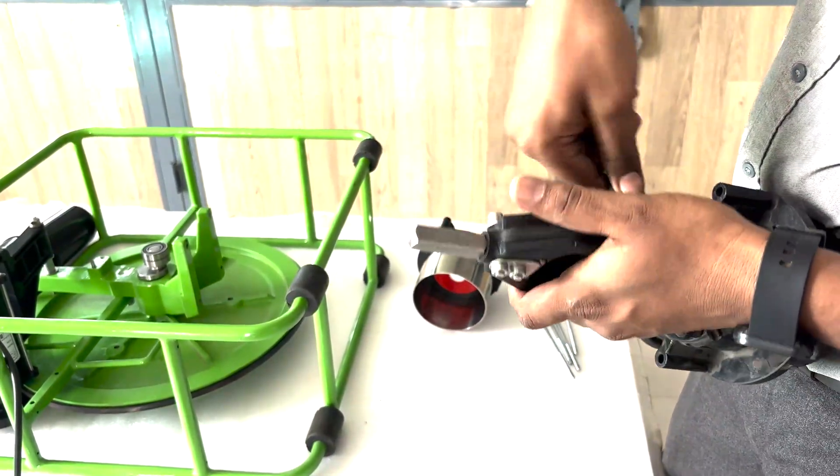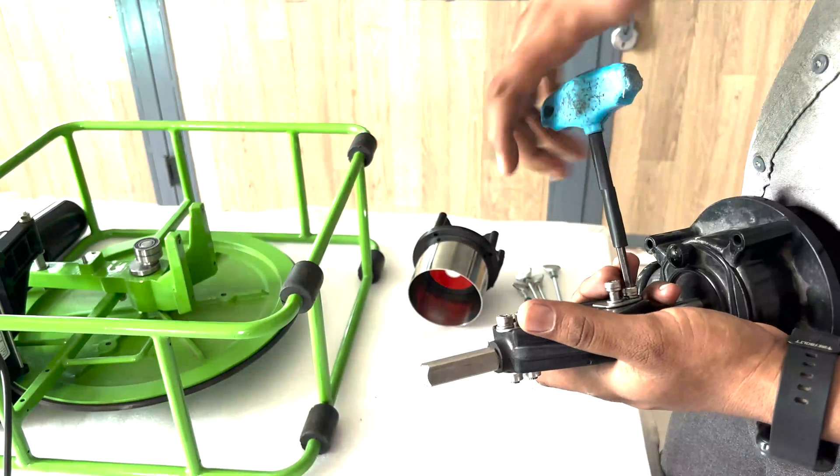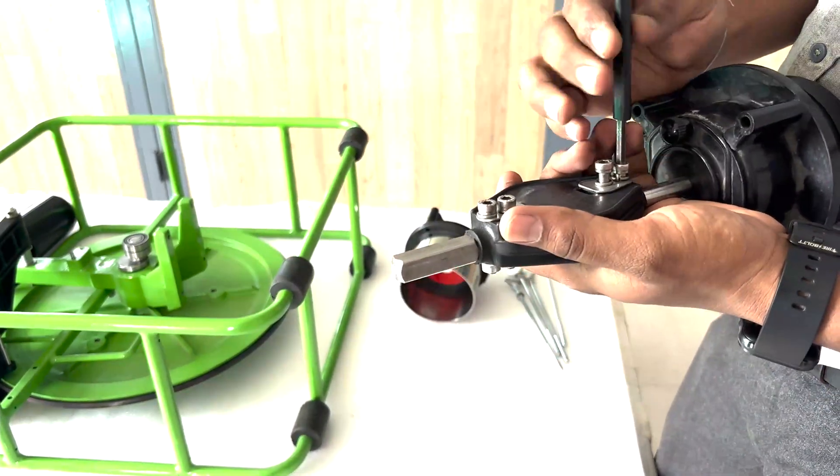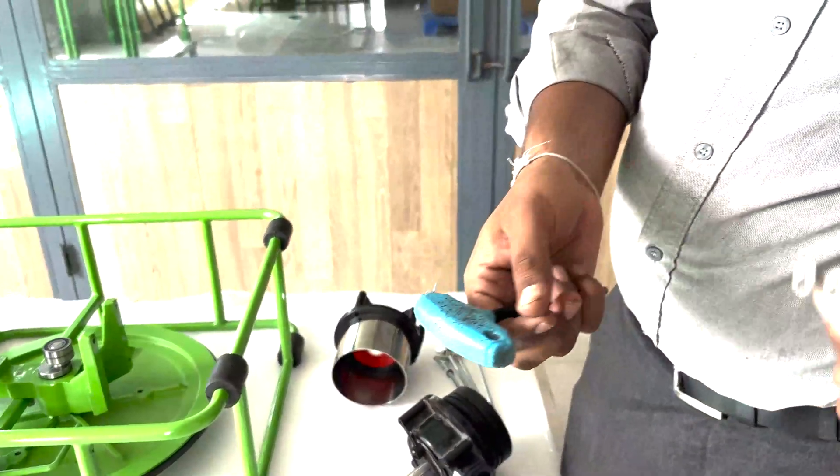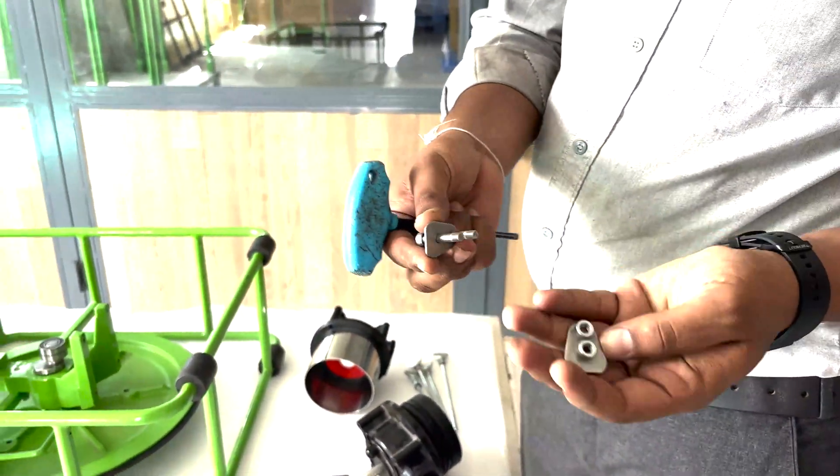And now remove the two bolts with the allen key on the lower side of the yoke to separate the yoke from the piston. Keep the yoke bracing and bolt aside.